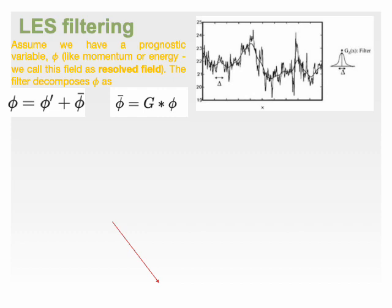The most commonly used filtering operation in LES is the spatial low-pass filter, which attenuates high-frequency fluctuations and retains larger-scale flow structures. This smooths out the high-frequency components as shown in this figure by the black smooth curve.